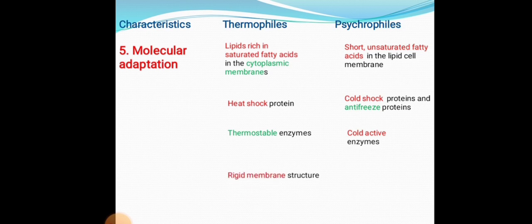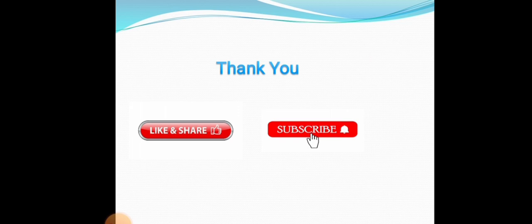Thermophiles have a rigid membrane structure, which protects them from high temperatures. Whereas psychrophiles have a flexible membrane structure that keeps them stable and functional at low temperatures. These are the differences between psychrophiles and thermophiles.